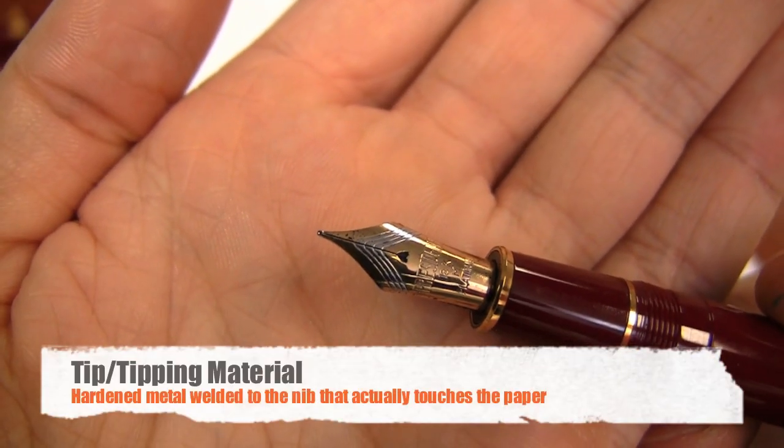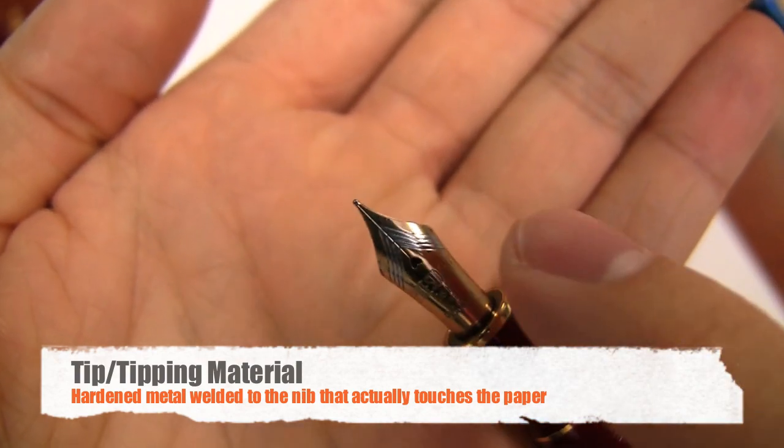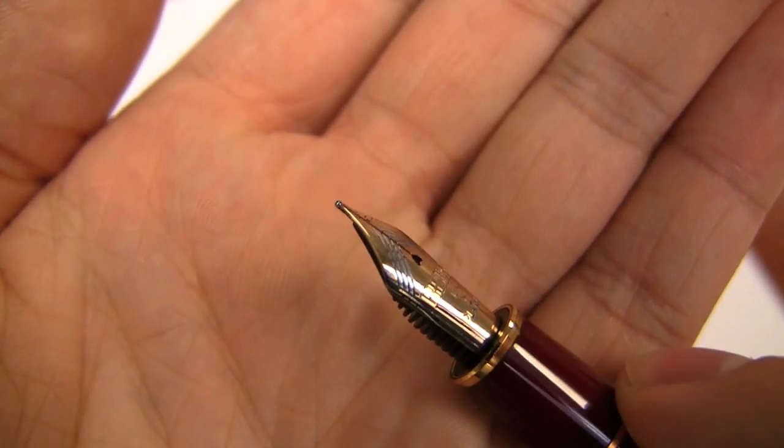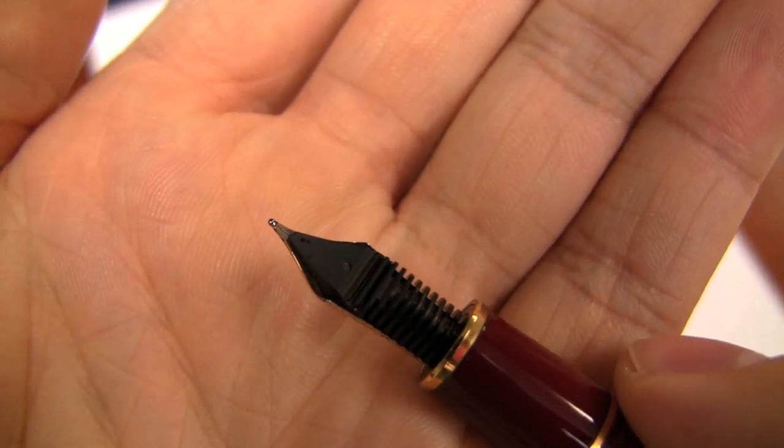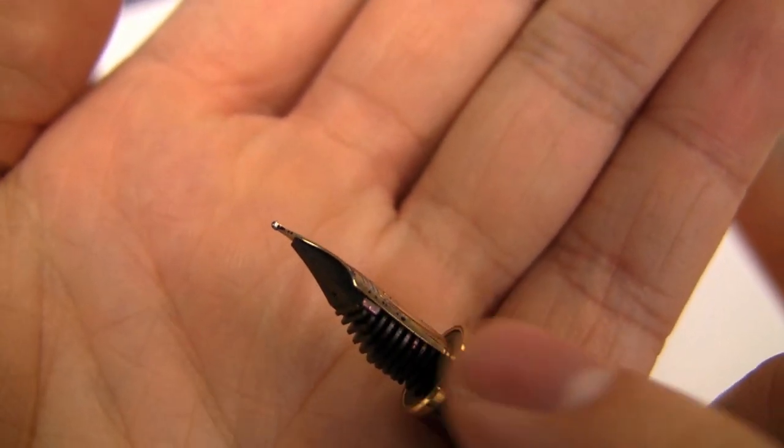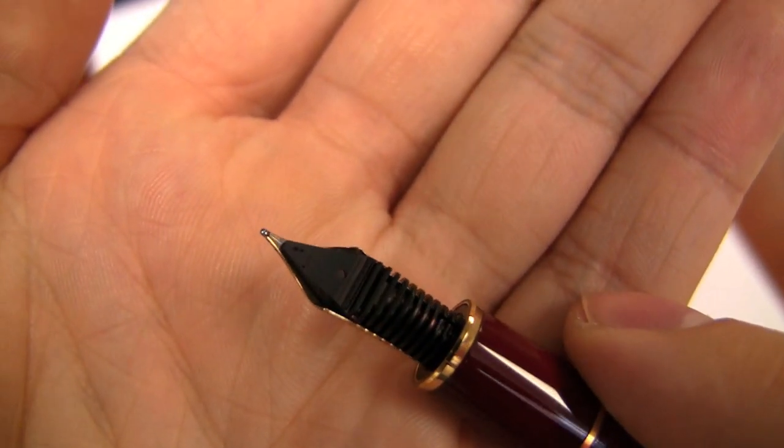The tip, or what's known as the tipping material, is this very small ball that's welded onto the end of the nib. This is the part of the nib that's actually touching the paper while you write. It's usually some kind of iridium alloy or some other hardened metal that's harder wearing than the gold or the steel that you would normally see used for the rest of the fountain pen nib.